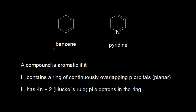In previous videos, we've already seen that benzene is aromatic because it fits the following criteria. Benzene contains a ring of continuously overlapping p orbitals. Each of the six carbons in benzene has a double bond to it, so each is sp2 hybridized, which means each has a free p orbital. Because benzene is a planar molecule, those p orbitals can overlap side by side and allow for delocalization of the pi electrons. Counting the pi electrons in benzene, we can see there are 2, 4, and 6.